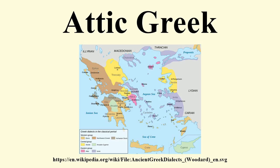Attic Greek persisted until the 3rd century BC, when it was replaced by its similar but more universal offspring, the common dialect. The cultural dominance of the Athenian Empire and the later adoption of Attic Greek by King Philip II of Macedon, father of the conqueror Alexander the Great, were key to the eventual victory of Attic over other Greek dialects and the spread of Koine Greek throughout Alexander's Hellenic Empire.